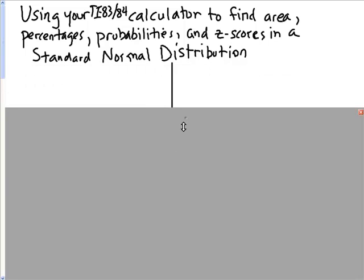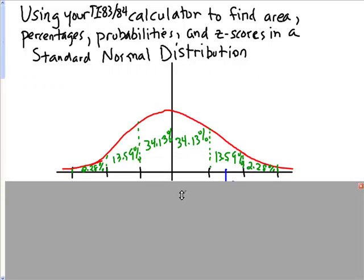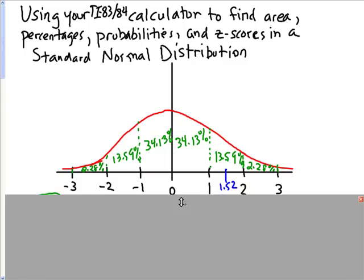First, let's look at this curve. This is our standard normal distribution curve, which represents our distribution, with zero being the mean, and one, two, and three representing z-scores, which correspond to one, two, and three standard deviations above the mean.